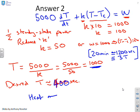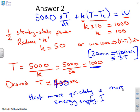So the only way we can heat it more quickly is basically more energy supply. In other words increase W. The real constraint we've got here is this 5000. It's got a heat capacity of 5000. So if you want to get that up to higher temperature quickly then you need more power.